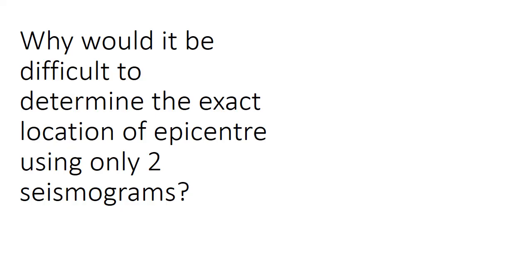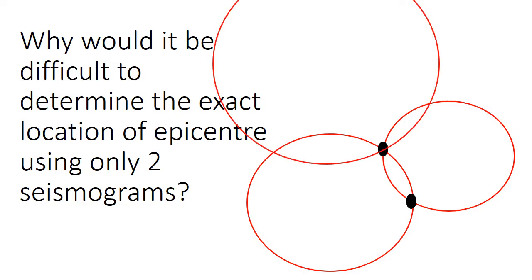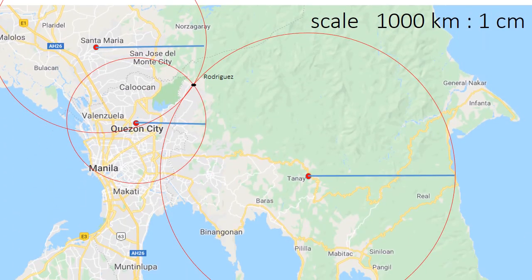At the start of the video, it was emphasized to use at least three seismograms. Why would it be difficult to determine the exact location of the epicenter using only two seismograms? Take a look at two circles — notice that there are two intersections. In an earthquake there is only one epicenter, so we cannot declare both intersections as the epicenter. We need a third circle to define which is the exact location. The point of intersection of three circles serves as the epicenter.